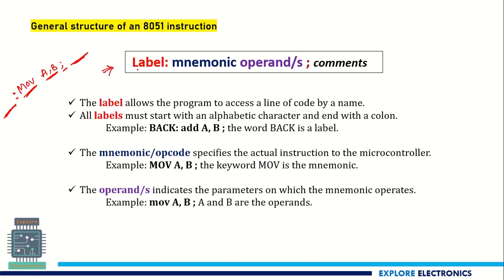That is what the general structure is showing here: label, colon, then mnemonic. Mnemonic can also be called the opcode of the instruction. After the opcode, we write the operands and then, if we want, we can write comments. So this is the example — 'back' is a label, colon, 'add' is an opcode. This will be adding the content of A and B. Similarly, MOV is an opcode — it will be moving the content of B to A.